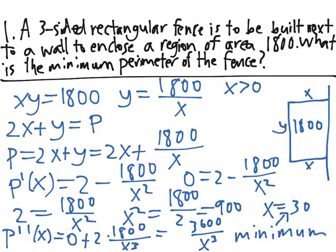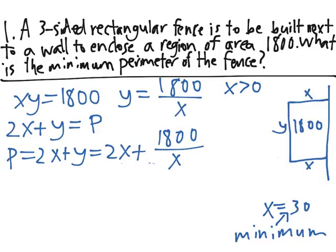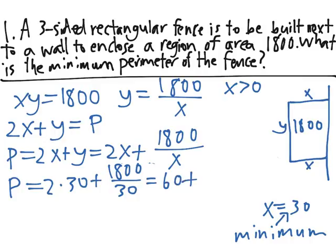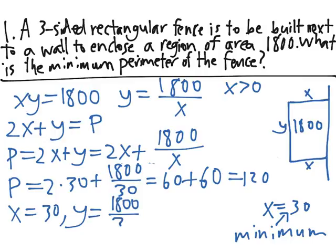The last step is to plug 30 in to find the actual perimeter and what the dimensions x and y have to be. So x equals 30, P is equal to 2 times 30, plus 1800 over 30, which equals 60, plus 60, or 120. So the optimal value for the perimeter is 120, and the x value is x equals 30, and then y is 1800 over the x value, which equals 60.